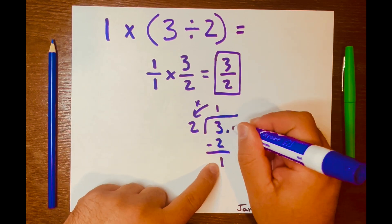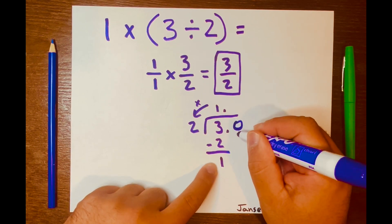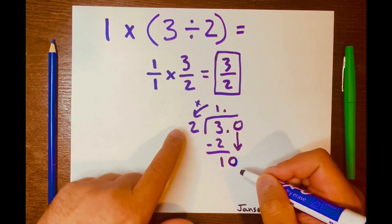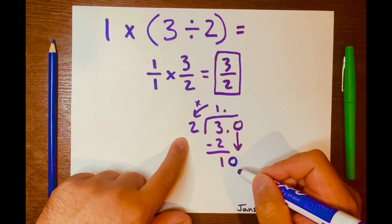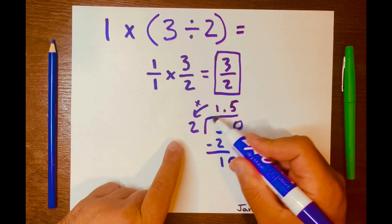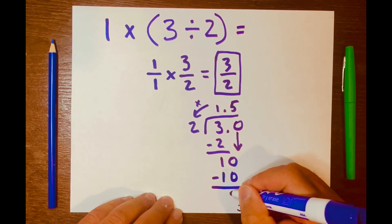So we need to borrow zero. I'll add a decimal after the 3 and after the 1. Now I'll bring down the zero, give it to the 1 - it becomes 10. How many times can 2 fit into 10? Five times. 5 × 2 = 10, and 10 - 10 = 0.